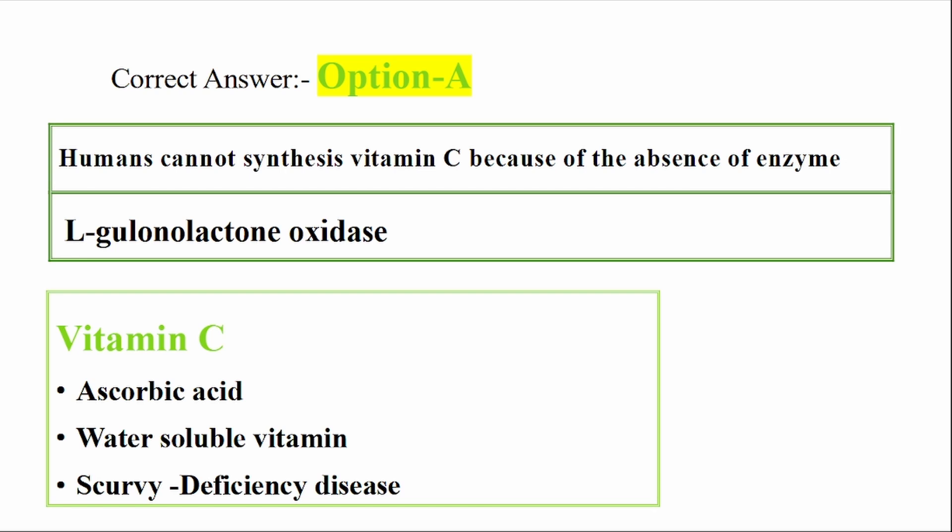Vitamin C is a water-soluble vitamin. Vitamins are of two types: water-soluble vitamins include vitamin C and vitamin B complexes; fat-soluble vitamins include vitamins A, D, E, K, and F. Vitamin C is also known as ascorbic acid. The deficiency disease of vitamin C is scurvy.